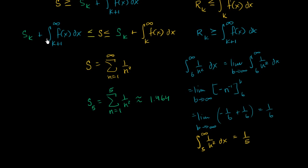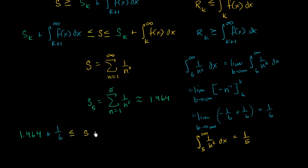Now we can put everything into this compound inequality. We have 1.464 plus one sixth — I'm being a little approximate here; it's really the exact s sub k from our calculator — so 1.464 plus one sixth is less than or equal to our sum, which is less than or equal to 1.464 plus one fifth. This last bound is straightforward: plus 0.2, giving us less than or equal to 1.664.